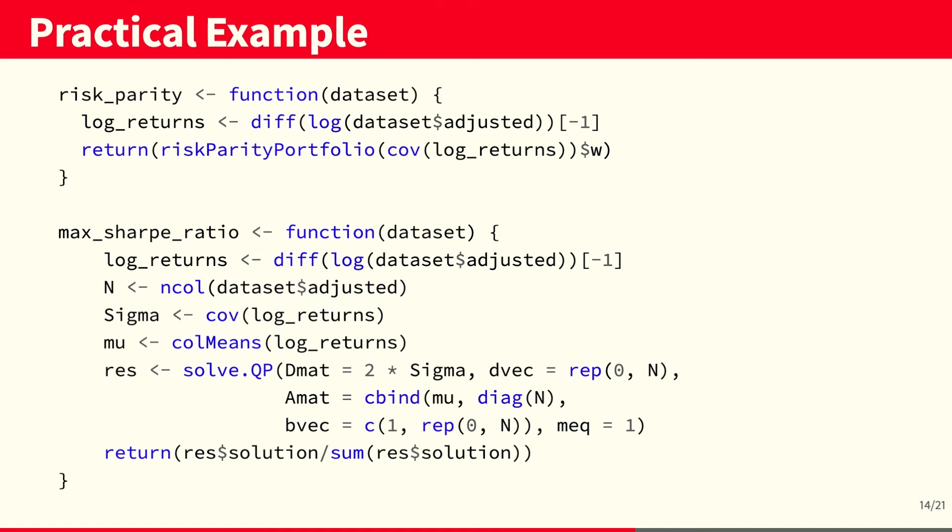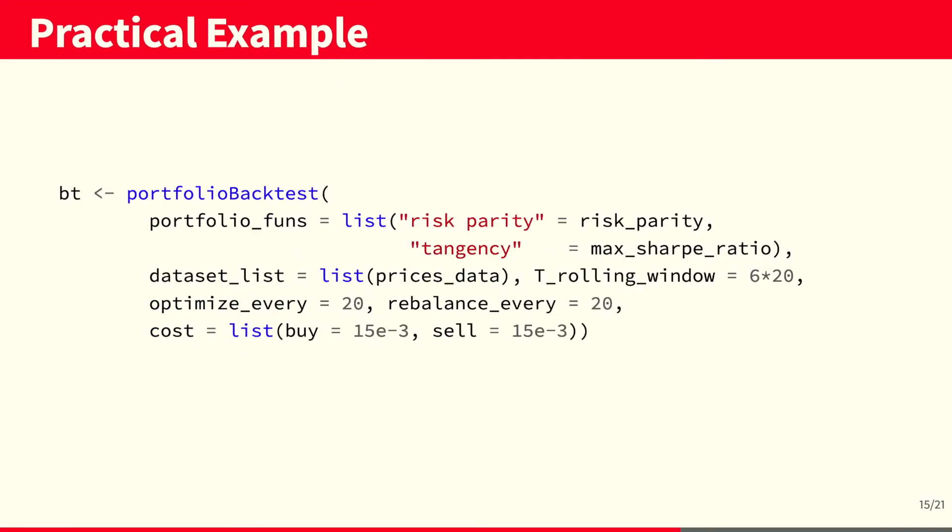The basic idea of these wrappers is that we write a function that takes in a dataset and returns the portfolio weights. Then we can call the portfolio backtest function, passing the functions to compute the risk parity portfolio and the maximum Sharpe ratio portfolio, also called the tangency portfolio. And then pass also the datasets and additional parameters for the portfolio backtest functions such as the size of the rolling window and the frequency of which we optimize and rebalance the portfolio.